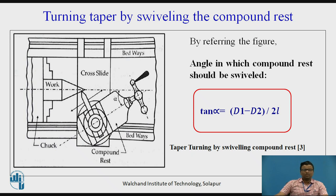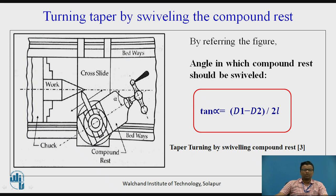Now the third method: taper turning by swivelling the compound rest. As you can see in the figure, this is the workpiece, this is the cross slide, and this is the compound rest placed on the saddle. The cutting tool is attached to the compound rest via the tool post. By loosening the bolt and nut present in the compound rest, you can swivel the compound rest through angle alpha to achieve the taper turning operation.